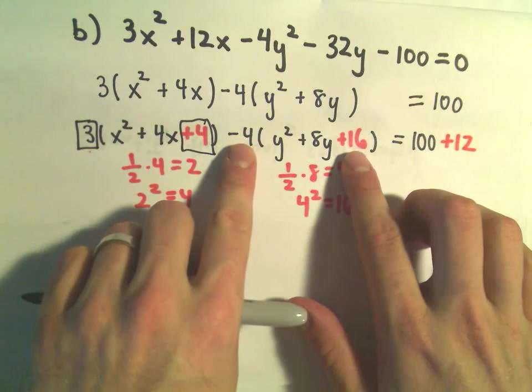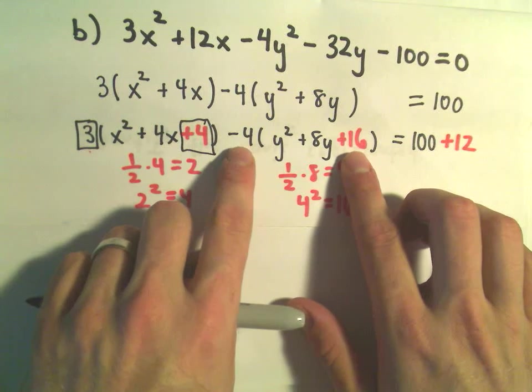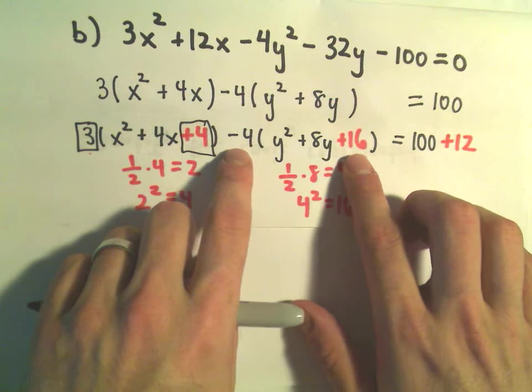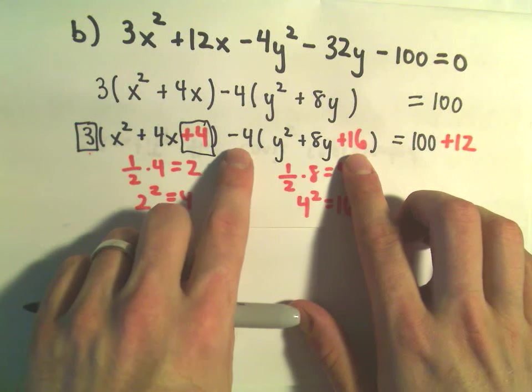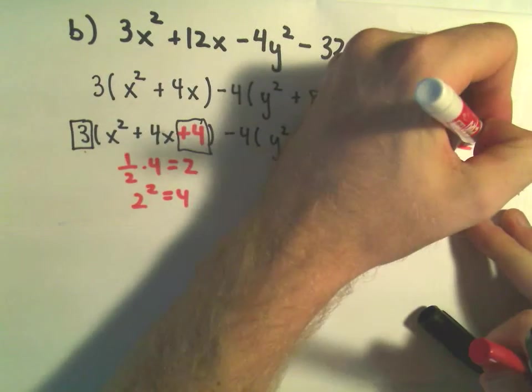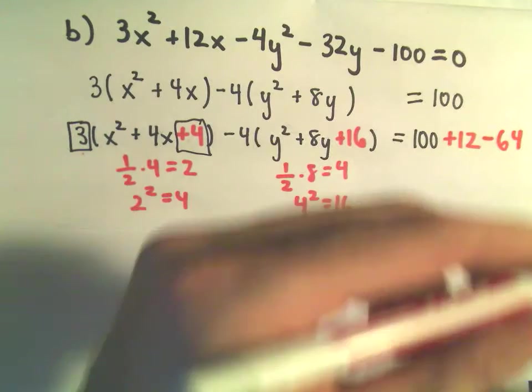If we take our negative 4 times 16, negative 4 times 16 is going to be negative 64. So really, I also threw negative 64 on the left side, which means I'm going to have to also subtract 64 on the right side.